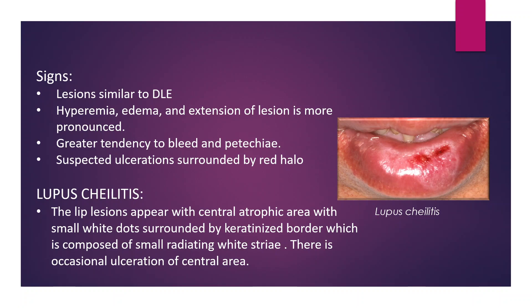Suspected ulceration surrounded by a red halo. Lupus cheilitis: lip lesions appear with a central atrophic area with small white dots surrounded by a keratinized border composed of small radiating white striae. There is occasional ulceration of the central area.